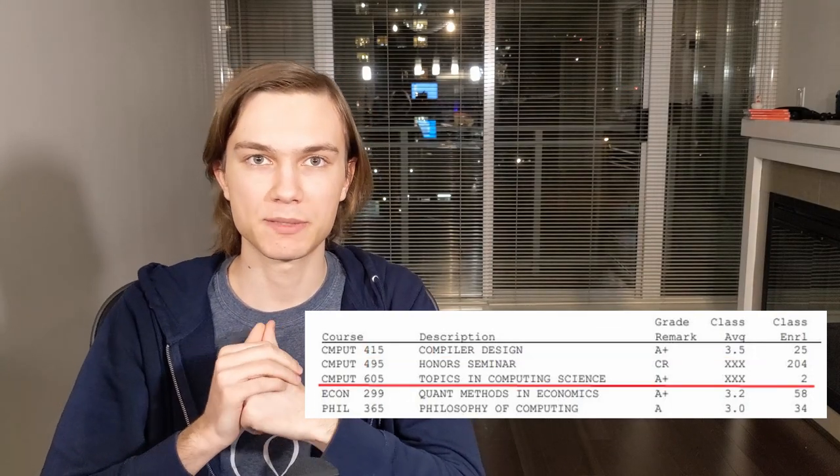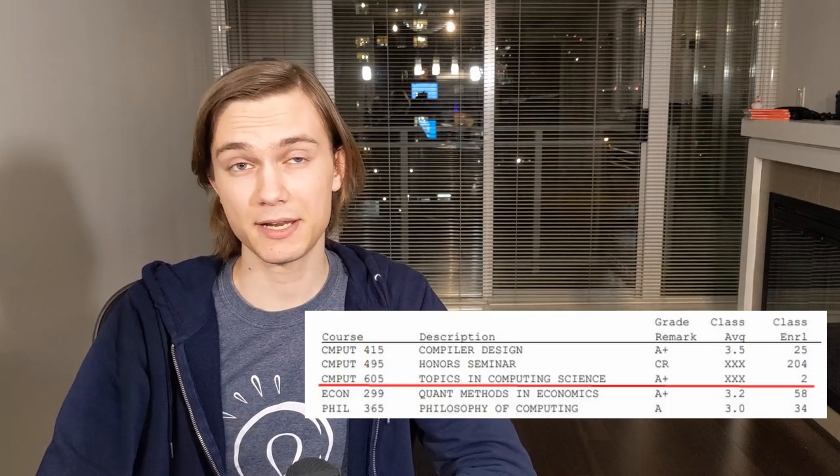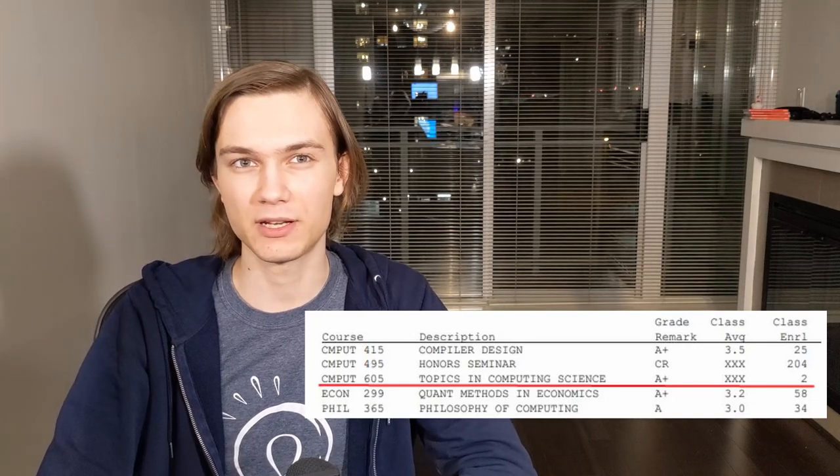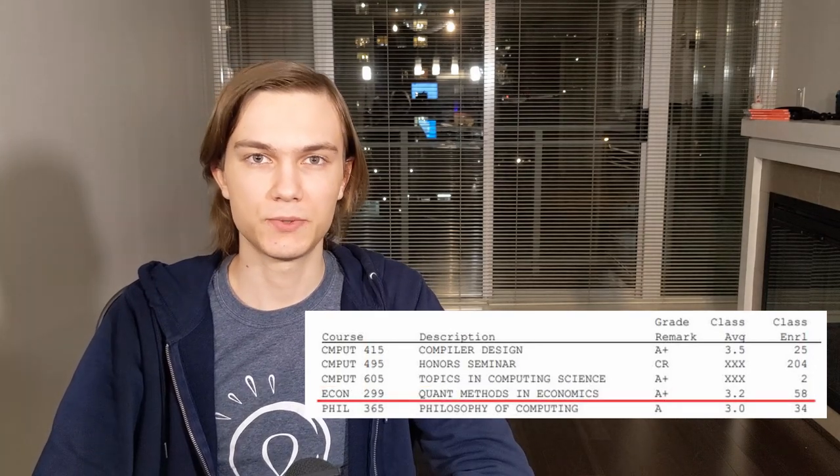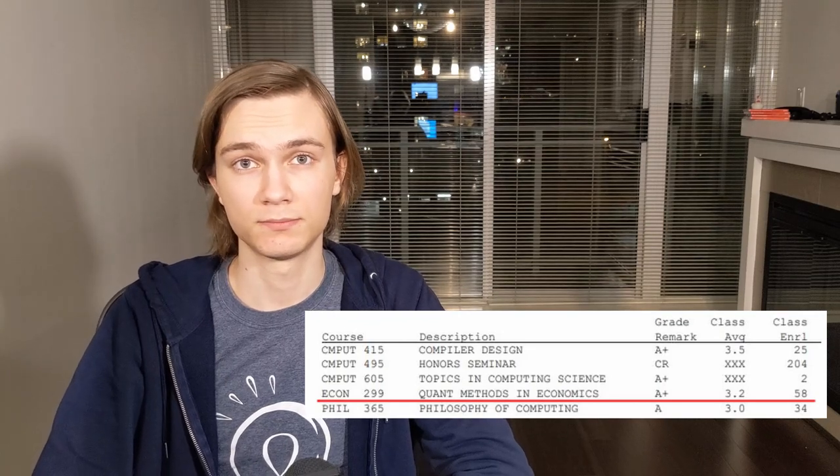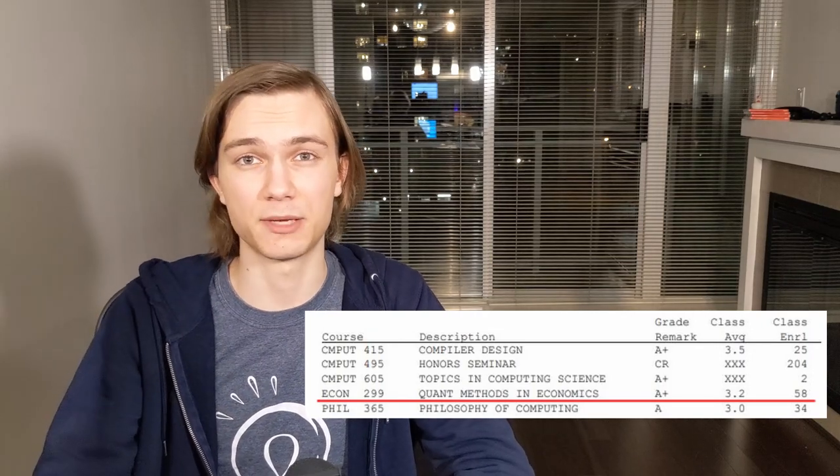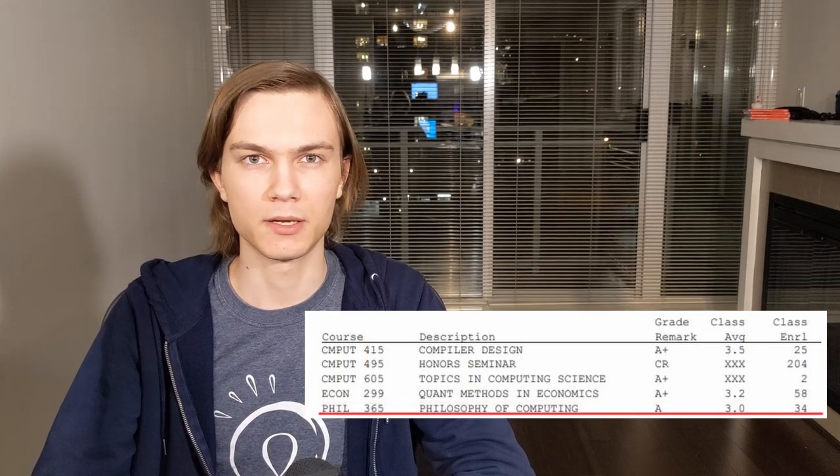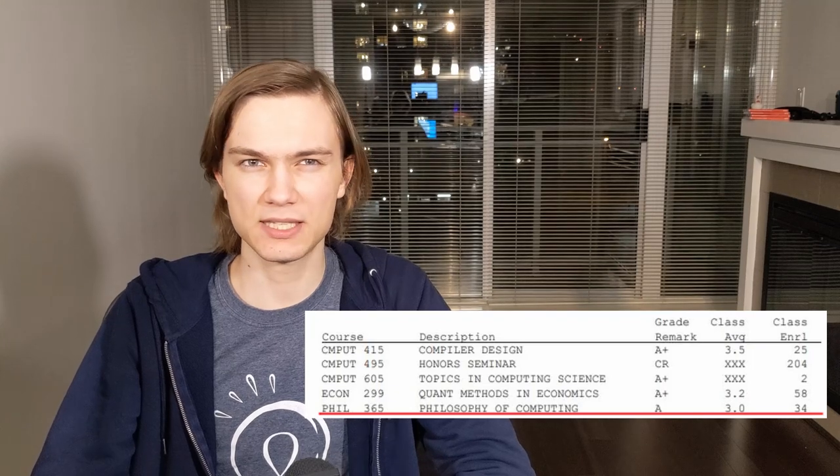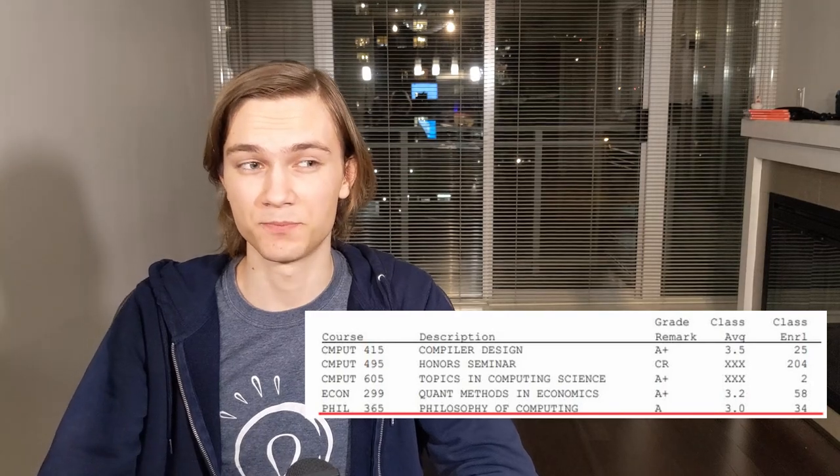CMPUT 605, Compiler Optimization. You technically can't actually take 415 and this course together, but I did anyway. A graduate class with a heavy research component along with a crazy project course sounded like a good idea to me at the time, and still is to be honest. ECON 299, Quantitative Methods in Econ. It's basically introductory econometrics, but I had so much stats background at this point that it was really easy for me. Probably should not have been allowed to take it looking back. PHIL 365, Philosophy of Computing. You know what? A surprisingly fun course, especially since I like writing. I actually got second in the class behind a philosophy student by less than a percent, and they also got an A, so take these grades as you will. And that concluded my entire degree.